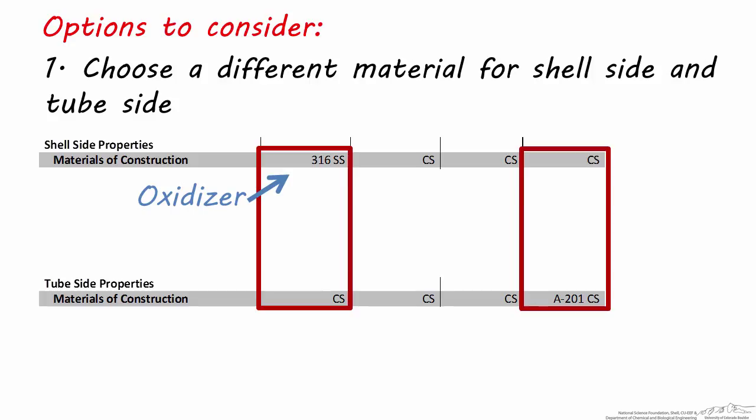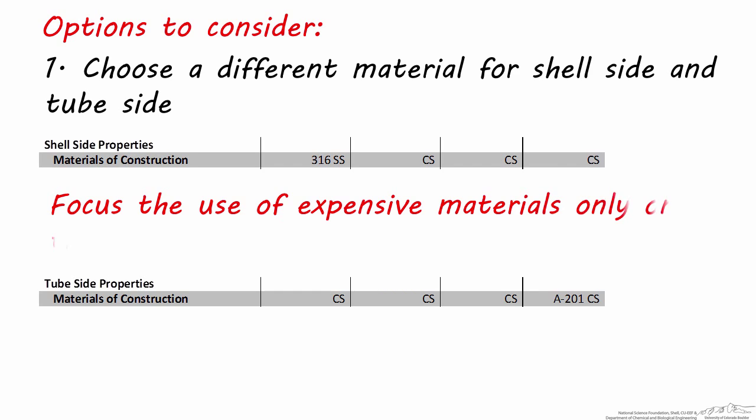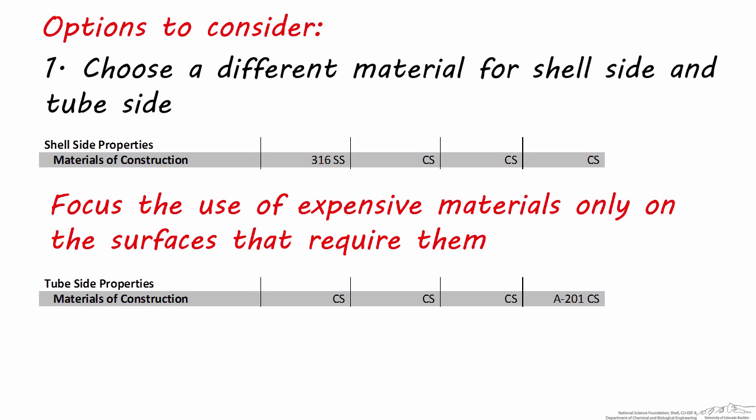You see this often when the process stream is under high temperature conditions or is reactive, oxidizing, acidic, or basic, but it's being heated or cooled by a fairly innocuous stream such as water. Some people think that if you must use, for example, nickel or aluminum tube-side because of extreme temperature conditions or potential reactivity, that the entire heat exchanger must be made of this material. Choosing to do this could more than double the cost of the heat exchanger. So if expensive materials are not necessary, avoid using them — focus the use of expensive materials on the surface areas that will be exposed to extreme temperature or reactivity conditions.